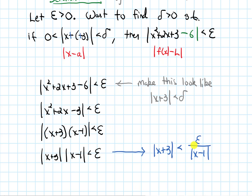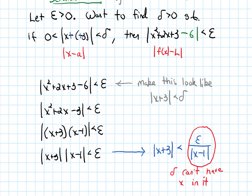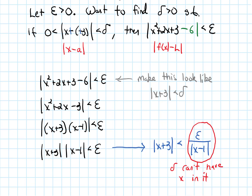There's a key problem here: based on what we've done before, we'd like this to be our delta, but delta is supposed to be just a number. It can't have a variable like x in it. It's fine for epsilon to appear in delta since epsilon is just some fixed number, but x could be a range of values. So for the absolute value of x minus 1, it would be really nice if this were just a number, so that dividing by it would leave no variable x in delta.